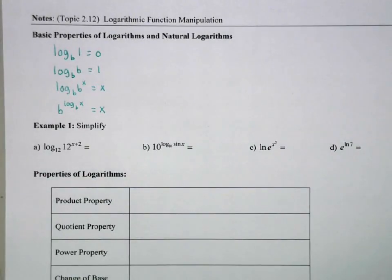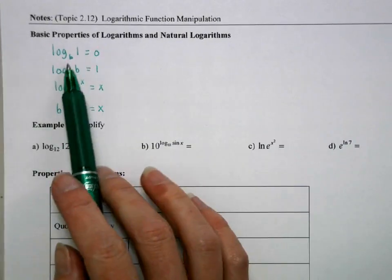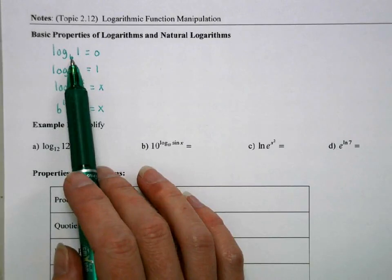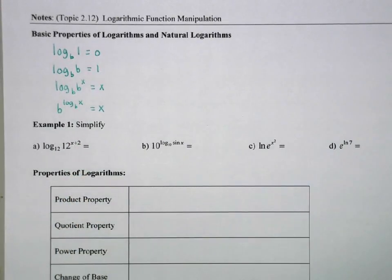Okay, so just some basic properties. Most of these revolve around the definition of logs. Log base b of 1 is 0, because the power that you would raise anything by that would be 1 is 0. So anything to the 0 power is 1.